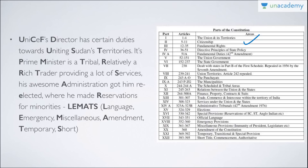Part 5 covers Articles 52 to 151 — the Union, Parliament, President, Prime Minister, etc. Part 6 is Articles 152 to 237 — the State Government. Part 7 no longer exists. Part 8 is Union Territories, Articles 239 to 241 (Article 242 is no longer in the constitution). Part 9 was added by the 73rd Constitutional Amendment Act of 1992 — the Panchayats. Part 9A covers Municipalities. Part 10 is Scheduled and Tribal Areas.